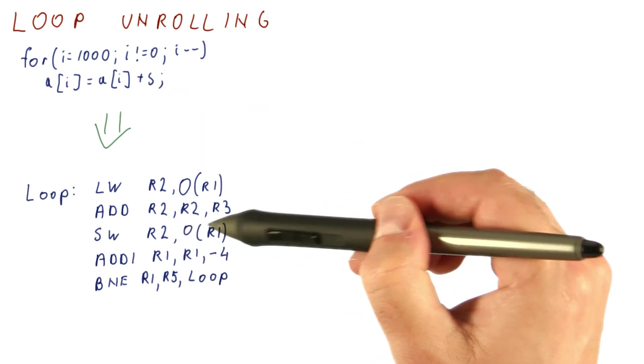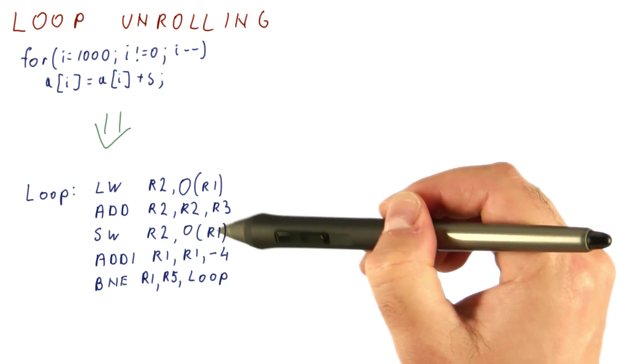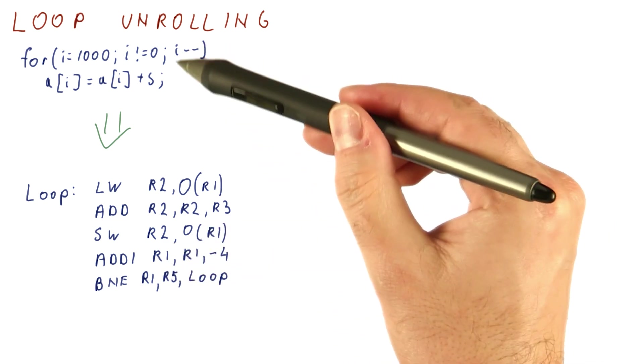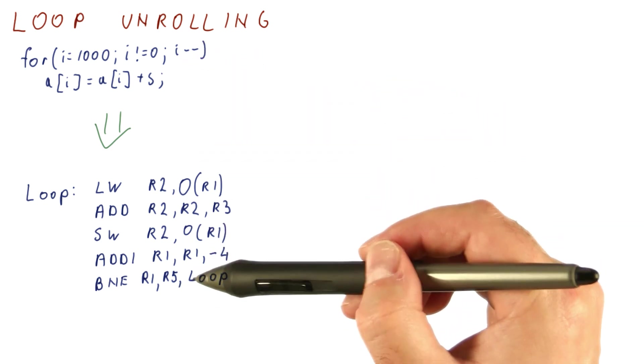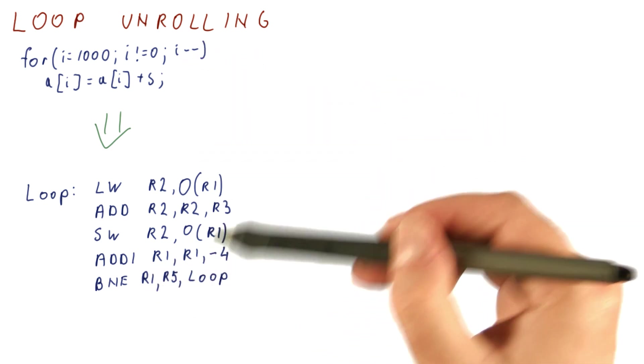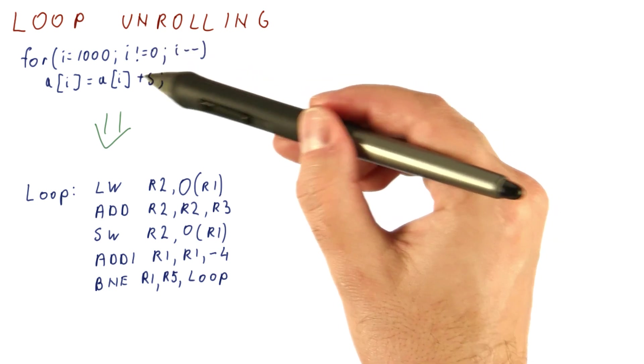And then we store it back into the a of i. And then we move our pointer four places down. That's equivalent to decrementing i. And then we check whether the pointer has reached the beginning of the array, which is equivalent to checking whether i is 0.